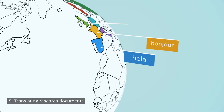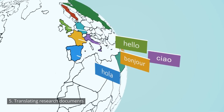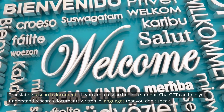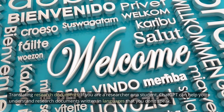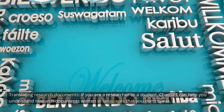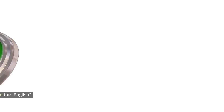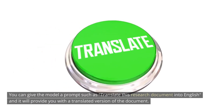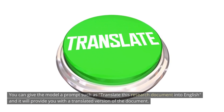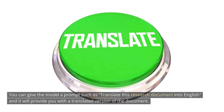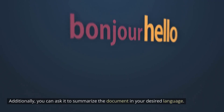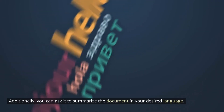5. Translating research documents. If you are a researcher or a student, ChatGPT can help you understand research documents written in languages that you don't speak. You can give the model a prompt such as 'Translate this research document into English,' and it will provide you with a translated version. Additionally, you can ask it to summarize the document in your desired language.